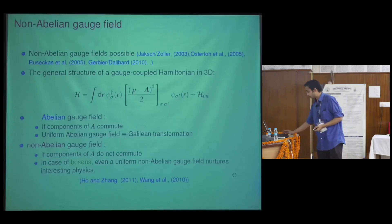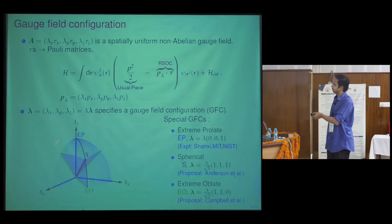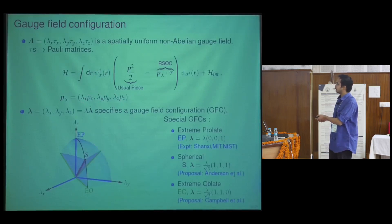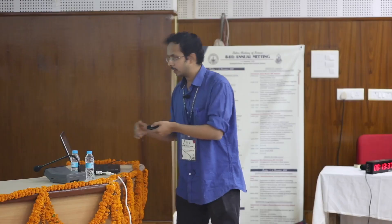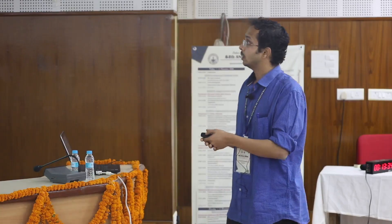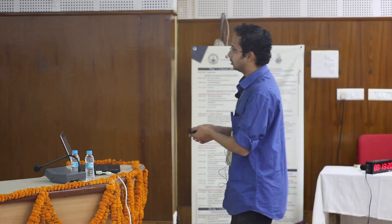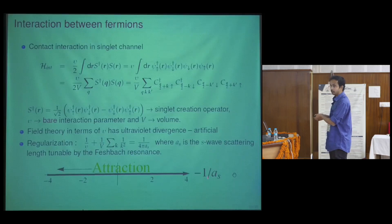We focus on fermionic systems. We characterize the gauge fields by the spin-orbit coupling, where spin and orbital (linear) momentum get coupled, and the strength of the coupling can be different in different directions. For the interactions in this fermionic system, contact interaction in the singlet channel is sufficient to capture the interesting physics. There is a problem with contact interaction — ultraviolet divergence requiring a cut-off — so effectively you look at the quantity minus 1 over the s-wave scattering length.